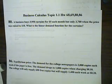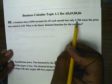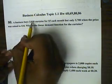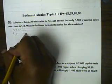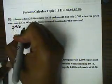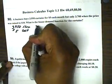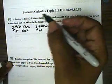Let's look at number 80. Number 80 says, a business buys 3,950 curtains for $5 each month, but only 3,700 when the price is raised to $10. They want a linear demand function for these curtains. So, we have 3,950 items when the cost is $5. These are the items when the cost is $5.